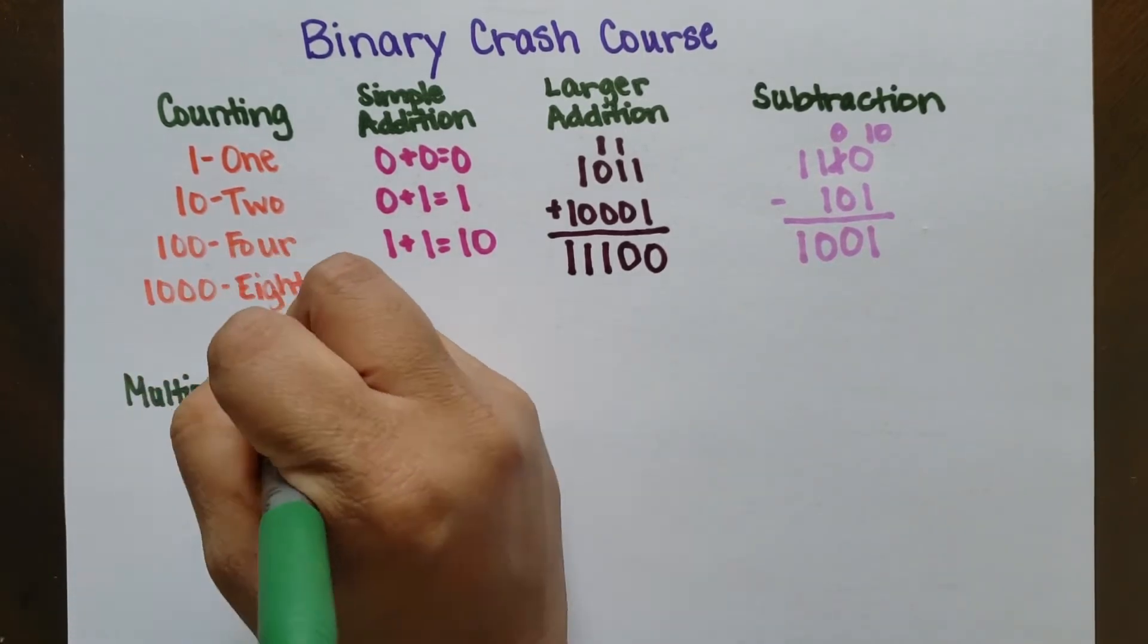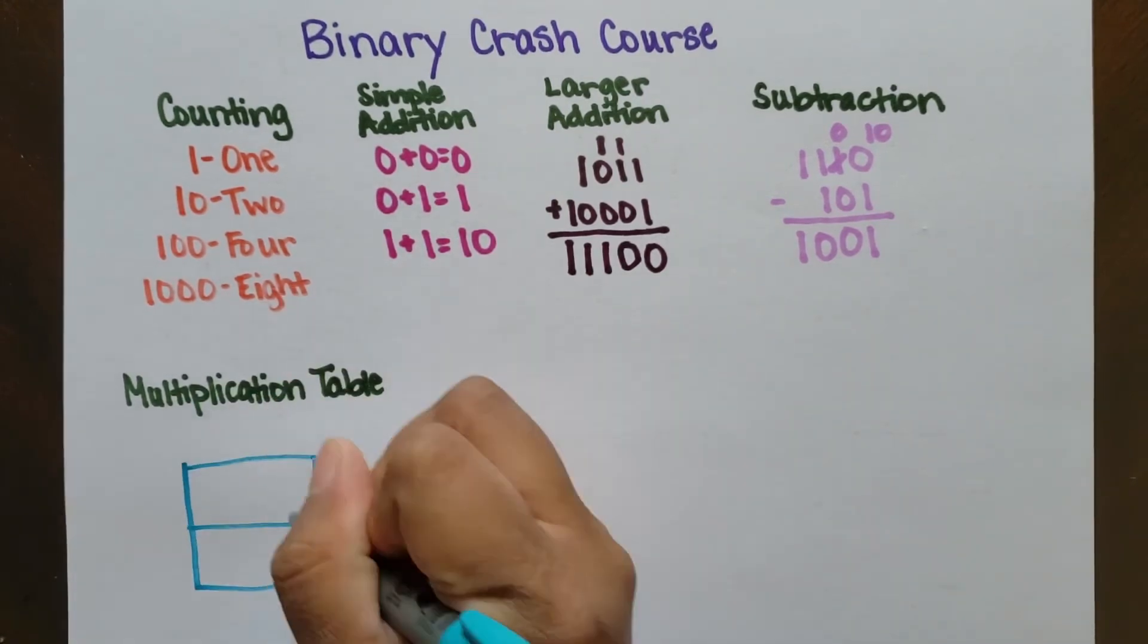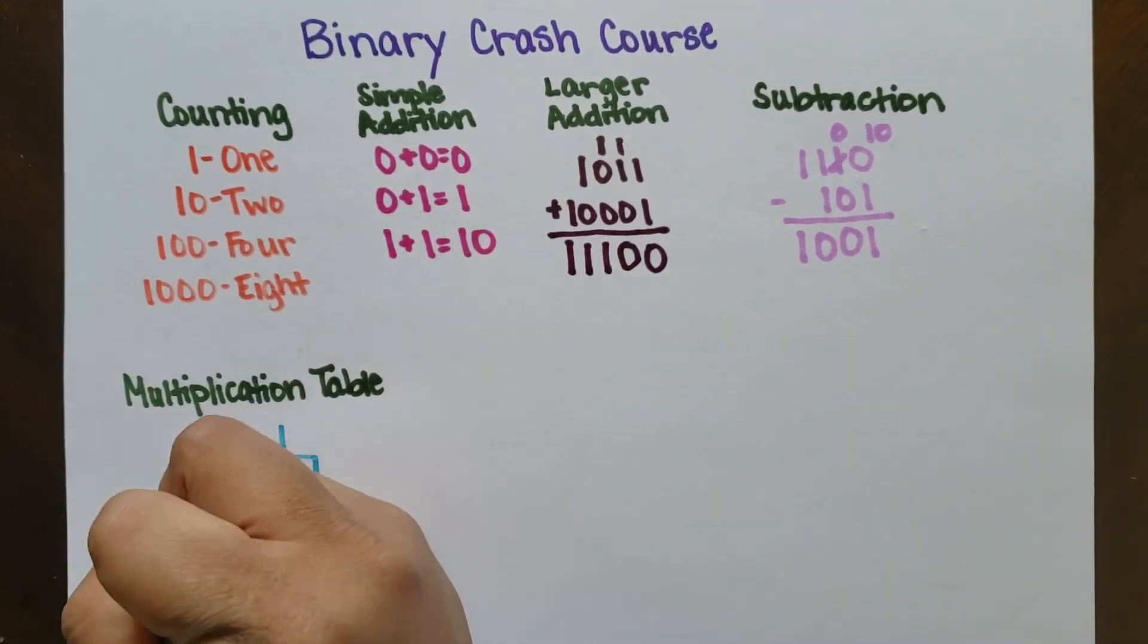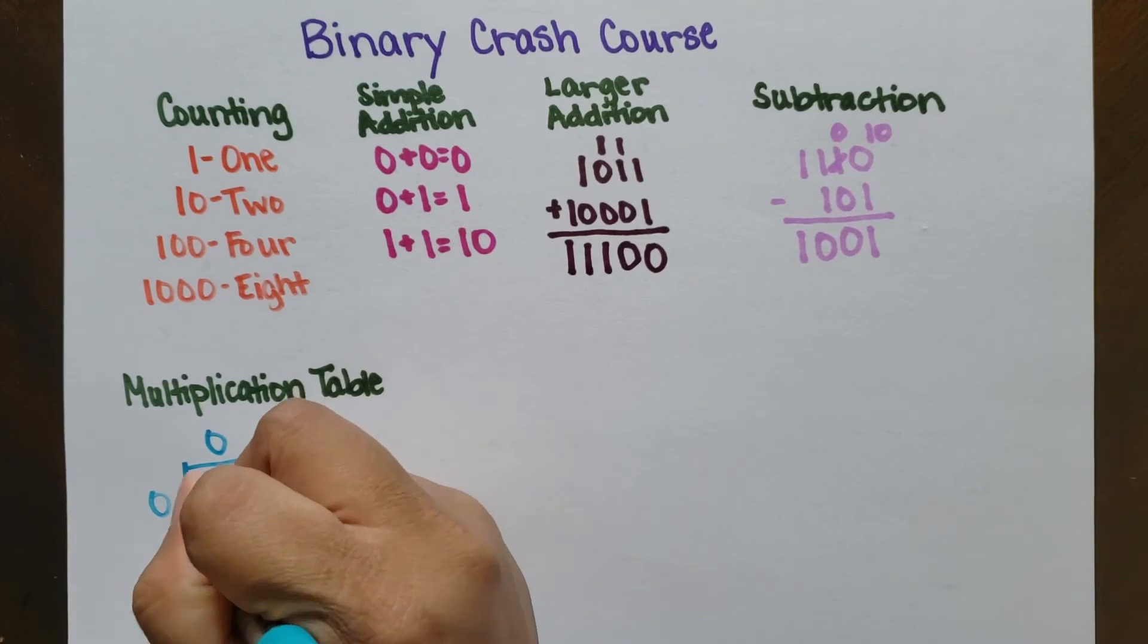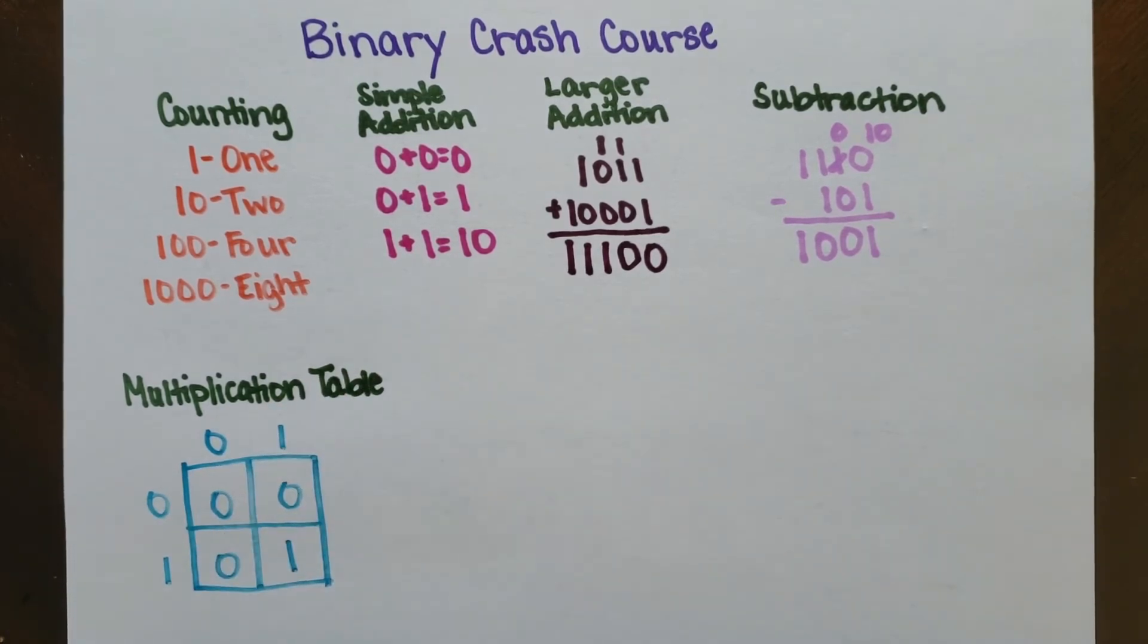Now let's look at the multiplication table. The multiplication table is very simple. It's just a 2 by 2 grid. Anything multiplied by 0 is just 0, and the only thing left is just 1 times 1, which is 1.